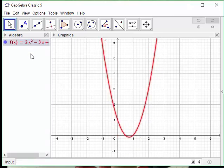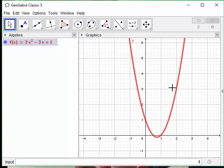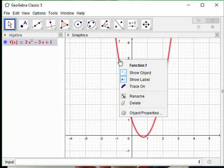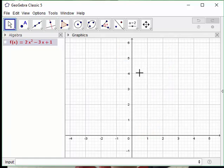I hit enter. In the algebra view we have the formula, and over in the graphic view we have the graph. It's labeled as f as well. I think I'm going to hide the label. Oops, not the object, but the label.